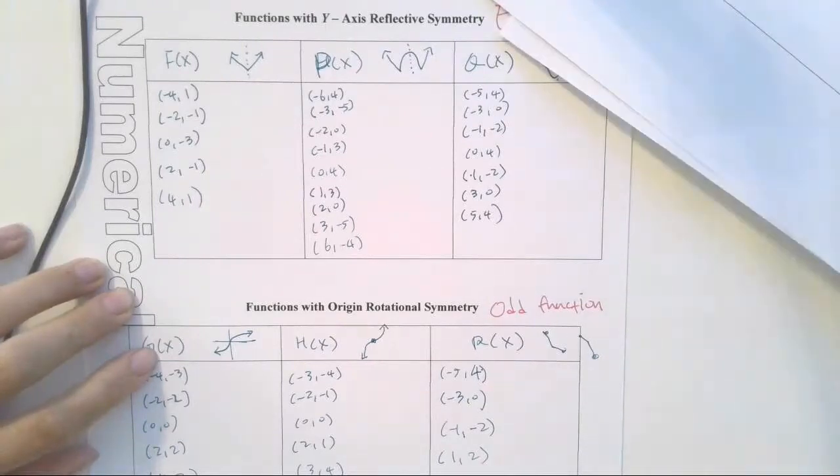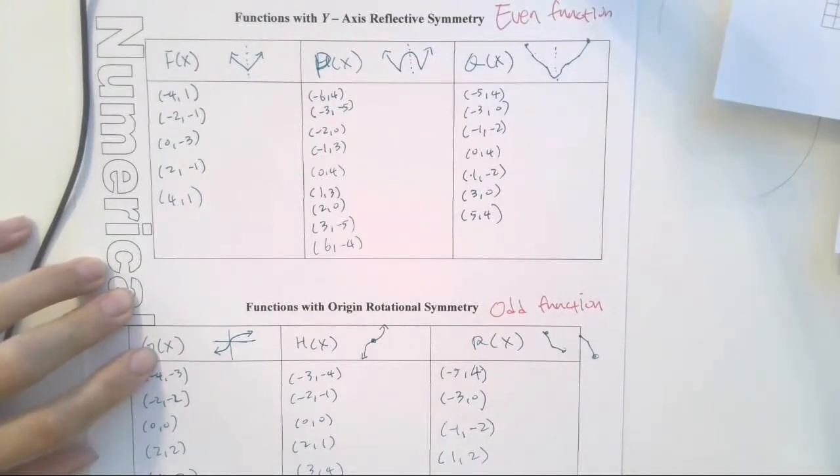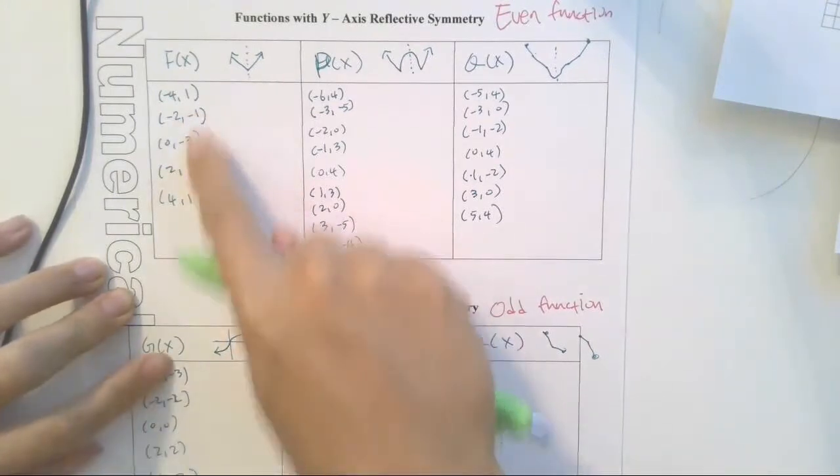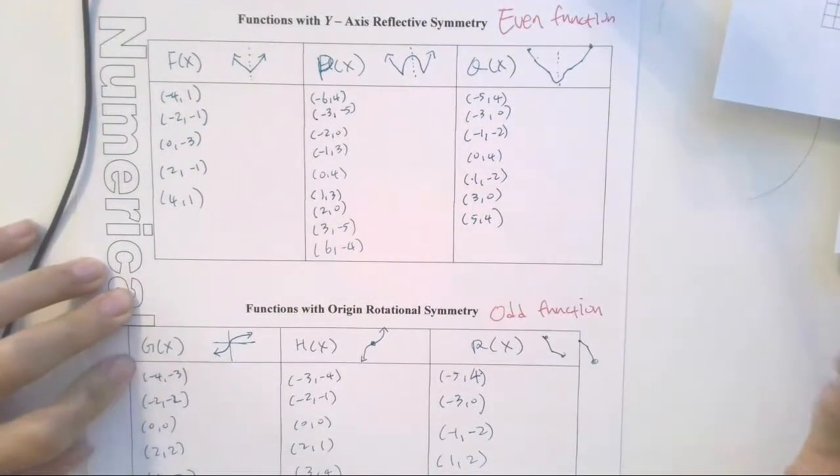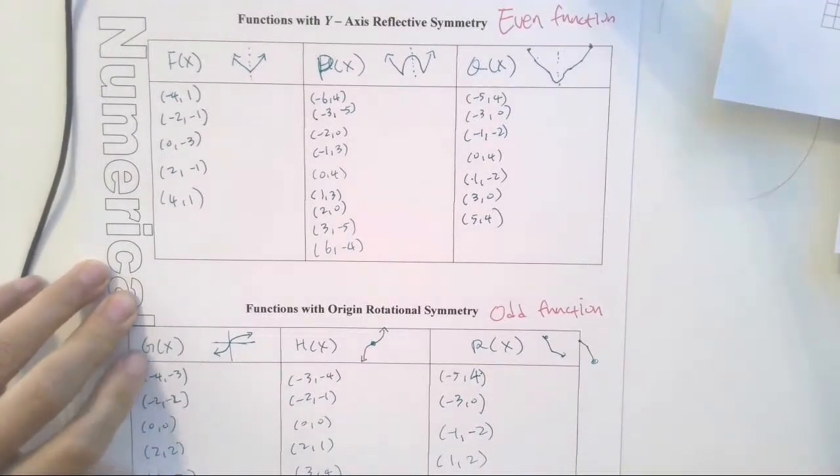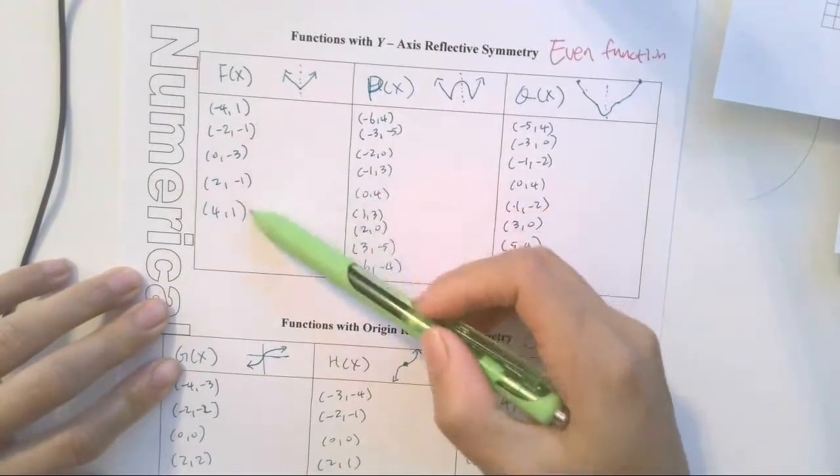All right, so now you're done with the graph. Now let's look at numerical analysis. So given a table like these, how would you know whether it's an even or odd function? Well, let's look to see whether you can identify any of the common patterns going on.